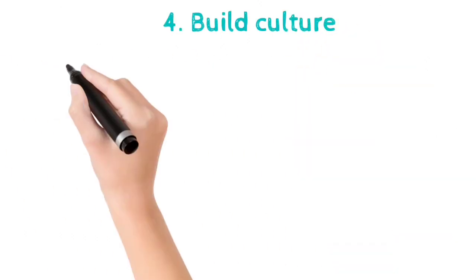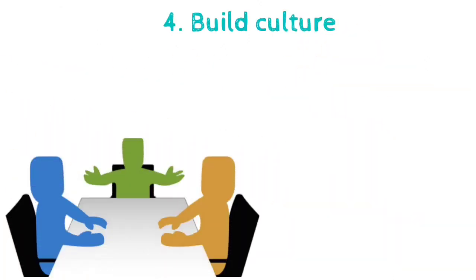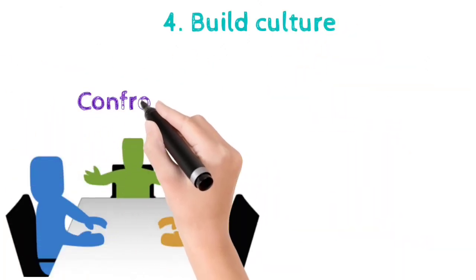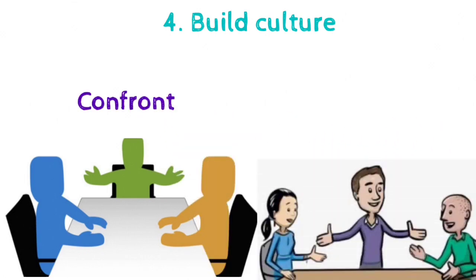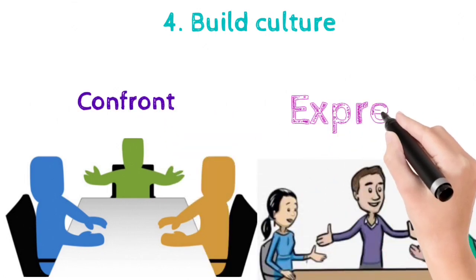Fourth is build the culture. Build the culture of not suppressing your emotions. Allow them to confront, express, talk. Don't be careless. That triggers aggression, violence and mood swings.